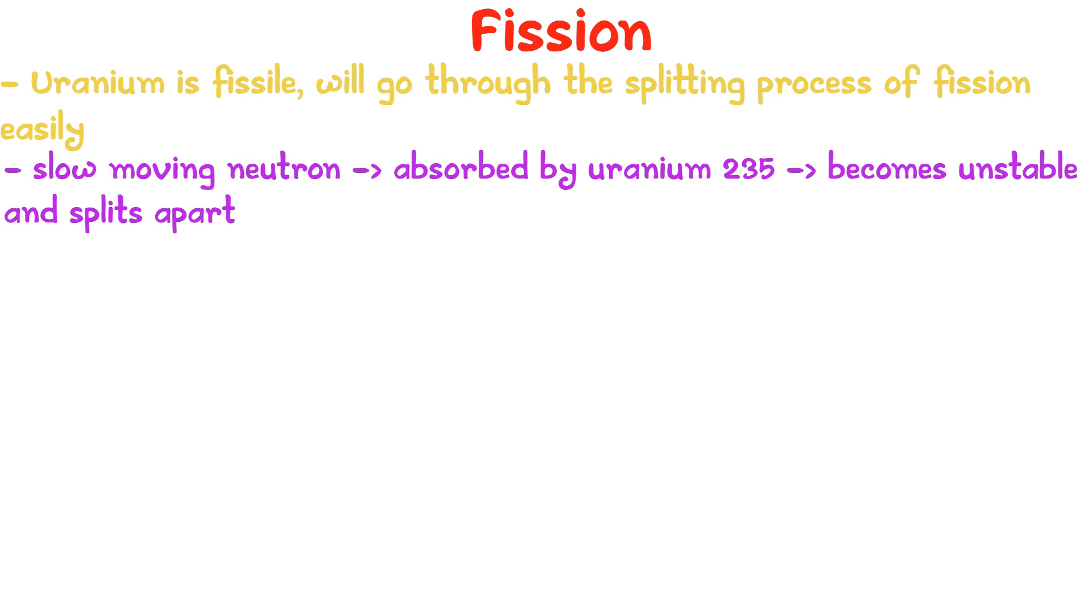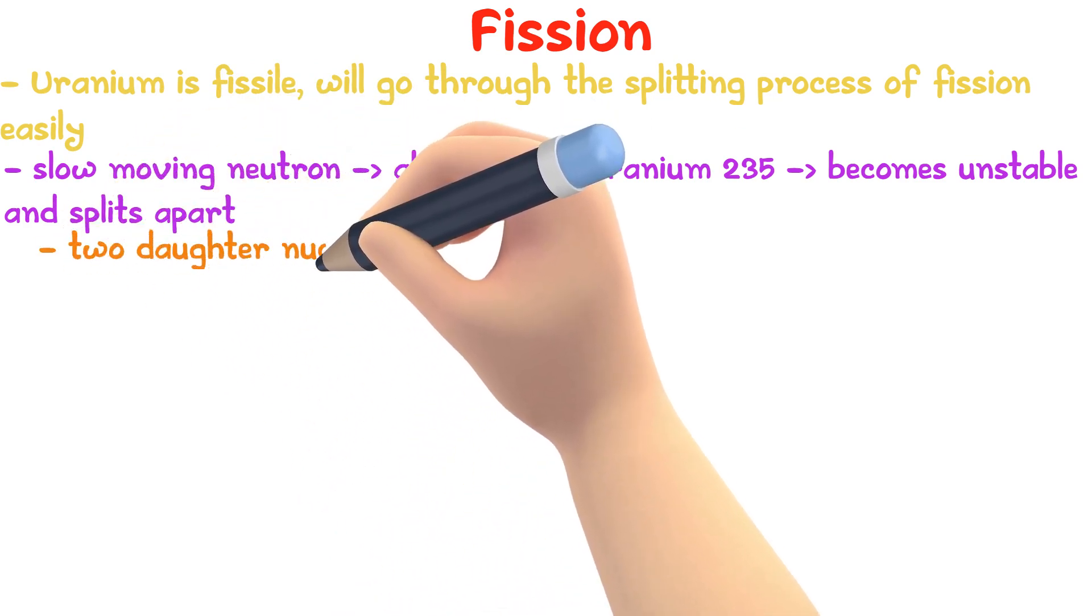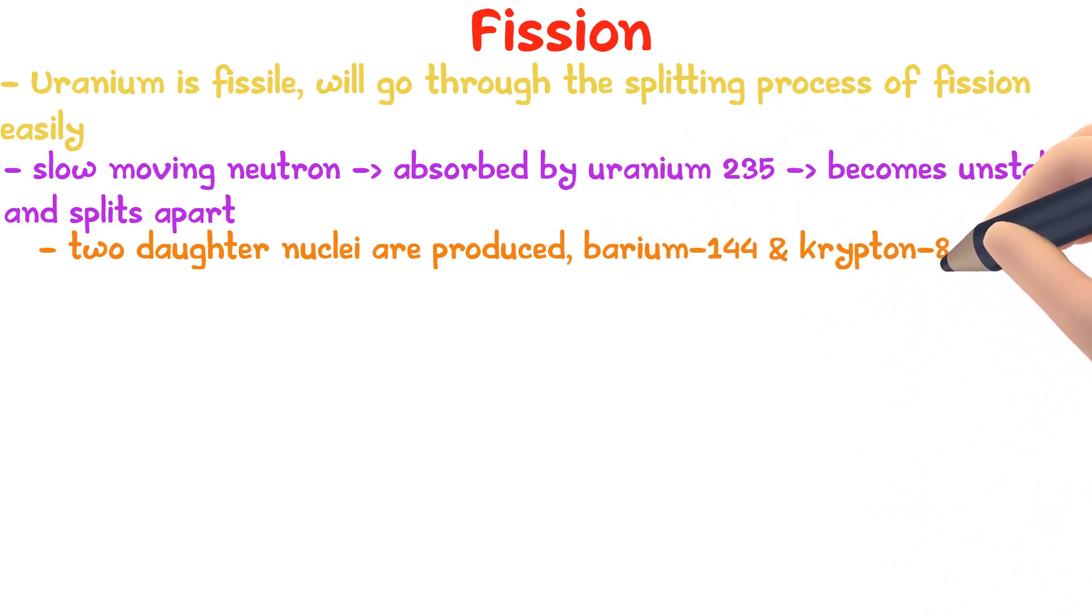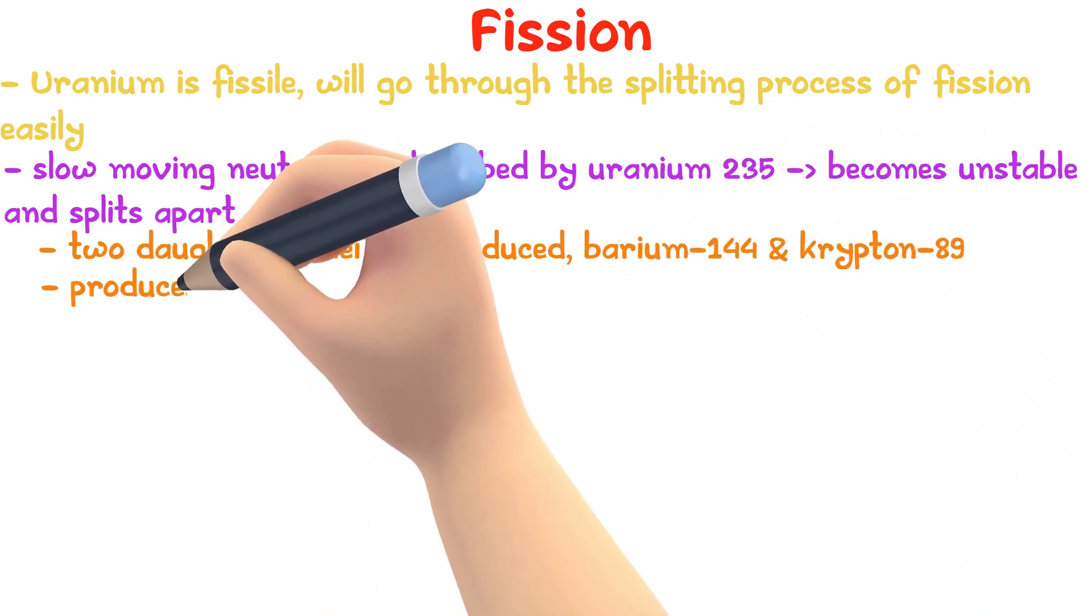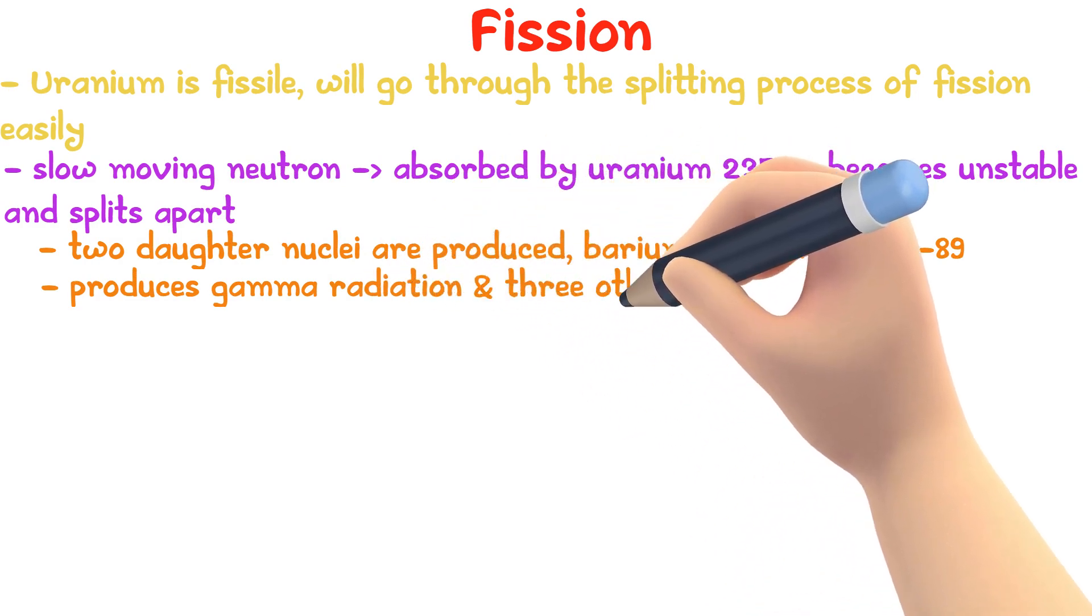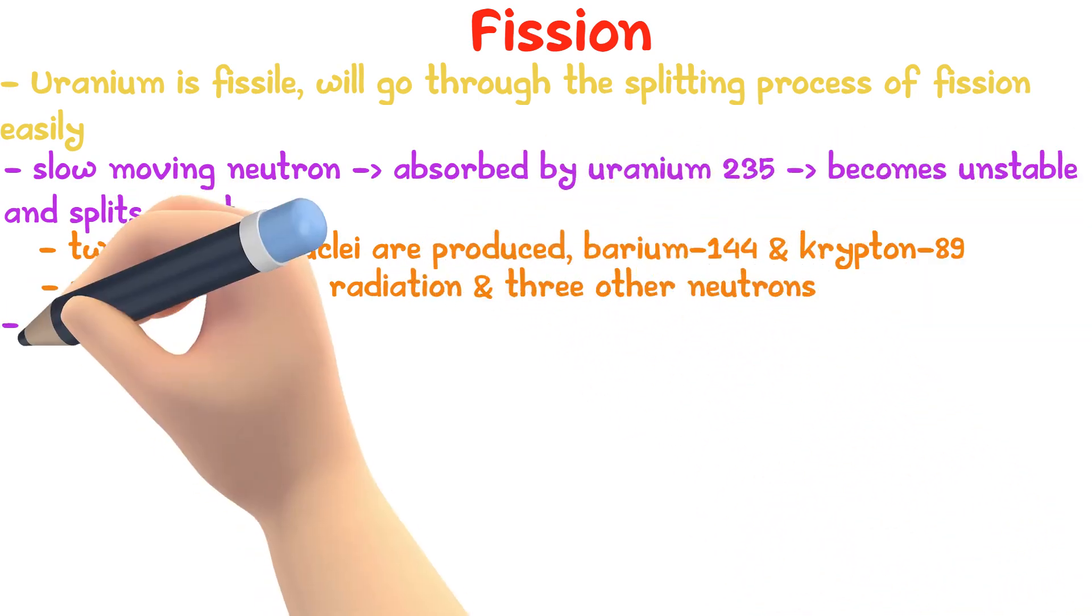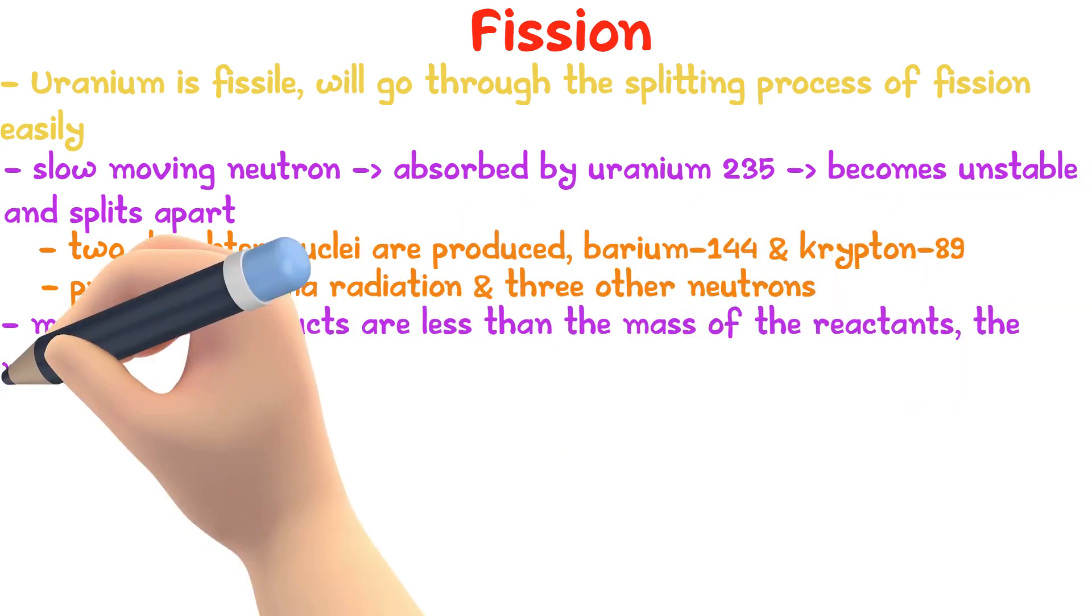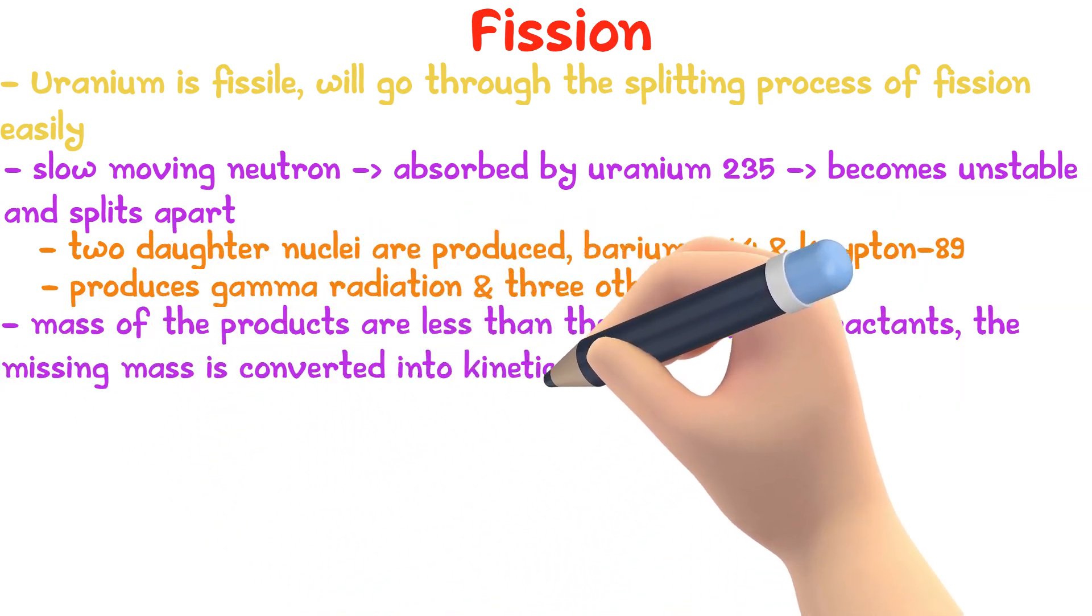Due to this fission process, two daughter nuclei are produced: barium-144 and krypton-89. This reaction also produces gamma radiation and three other neutrons. The mass of the products is less than the reactants, and the missing mass is converted into kinetic energy.